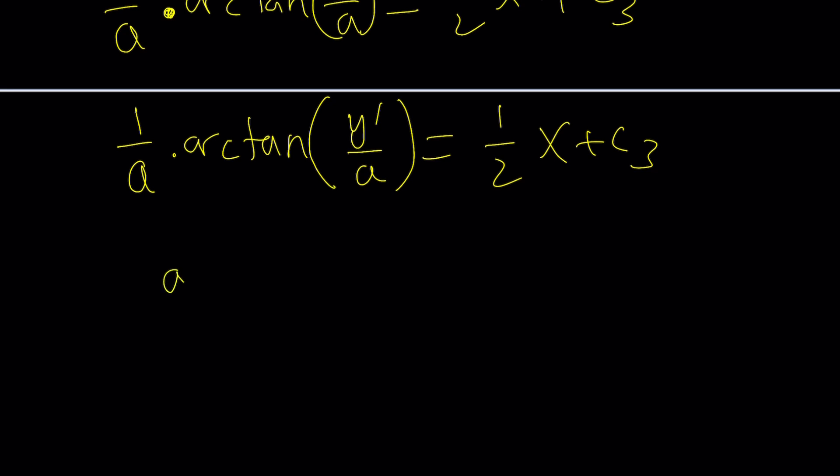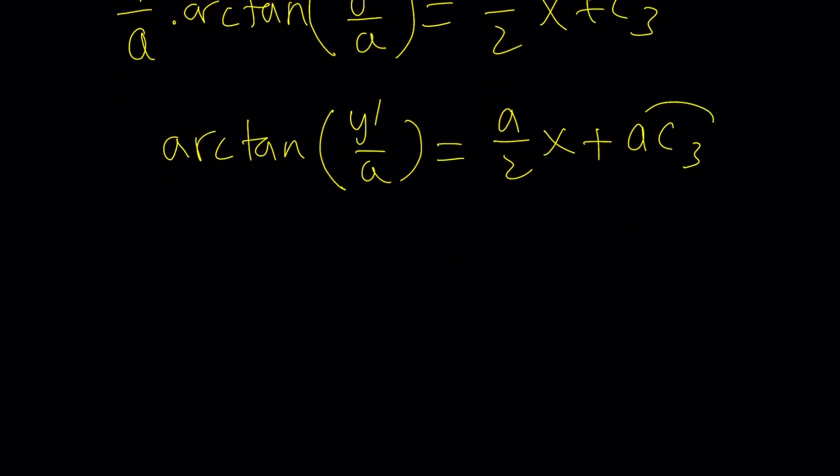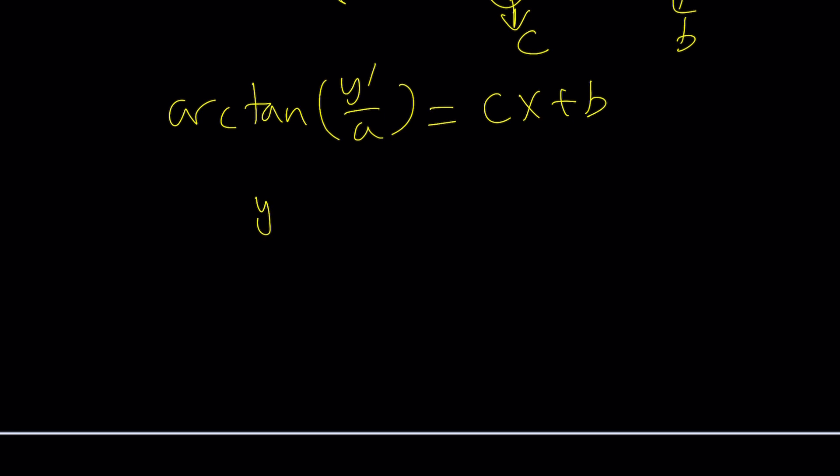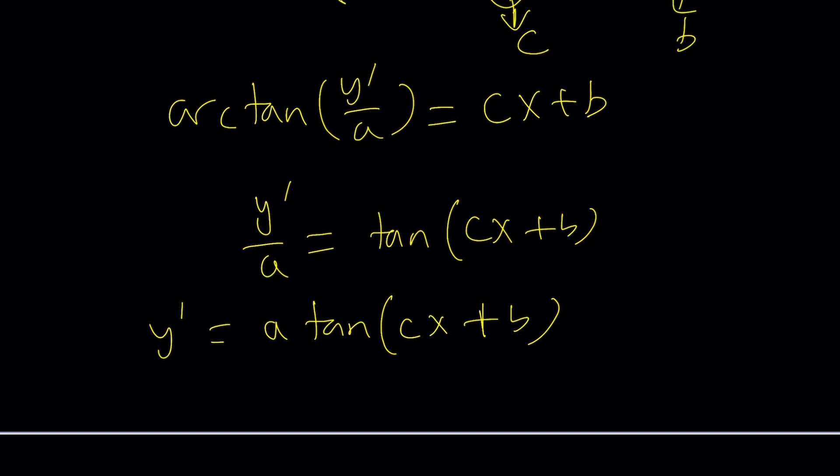And this is what we get. Obviously, you can do something like this. You can multiply both sides by A first. That's going to give you arctangent y prime over A equals A over 2x plus AC3. And then, we can kind of tan both sides. You can also call this B. And you can call this C. Whatever. I don't know. At the end, we're going to, you know, probably use something else. And so, you're going to have something like arctangent y prime over A equals Cx plus B. And then, if you tan both sides, y prime over A is going to be tangent of Cx plus B. And now, y prime is going to be A times tangent of Cx plus B. But, it's important to be able to get the u by itself because u is the derivative of y. So, we still need to solve this. This just brings up another differential equation which we can solve.